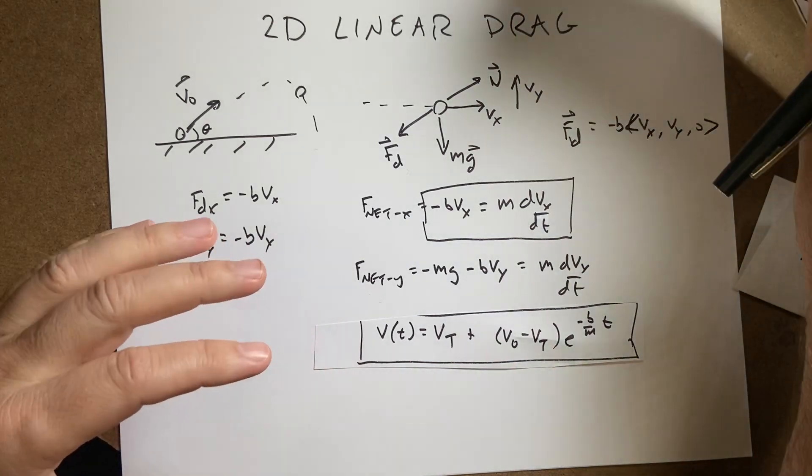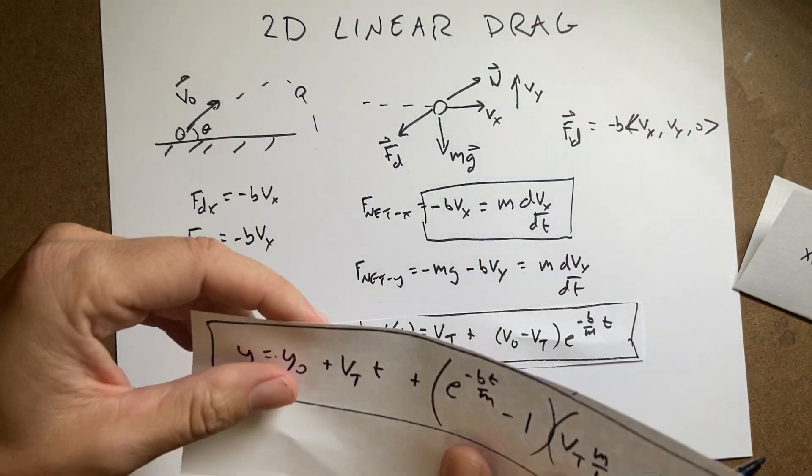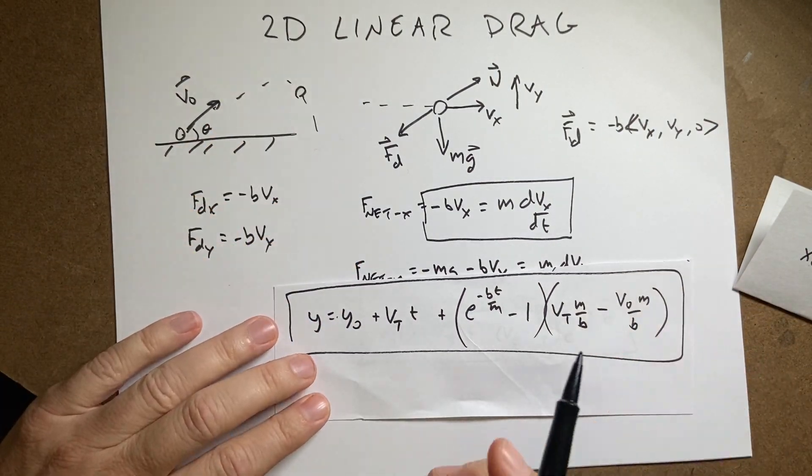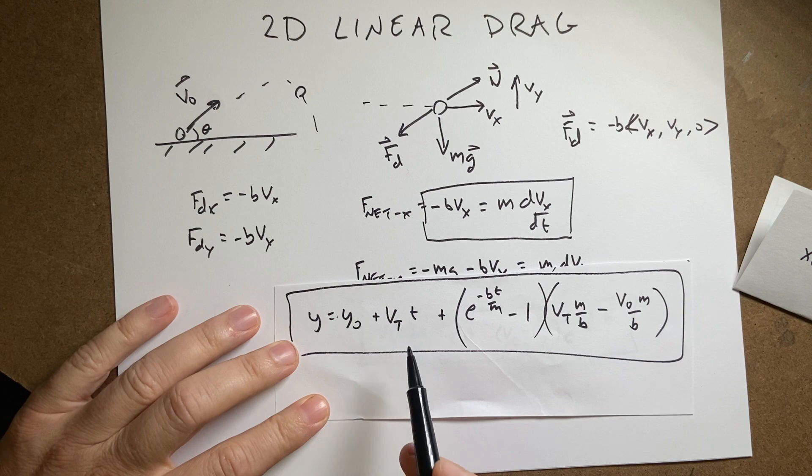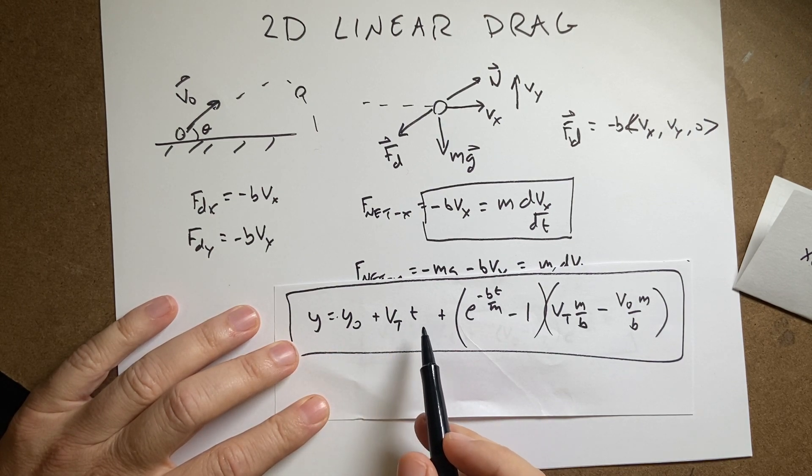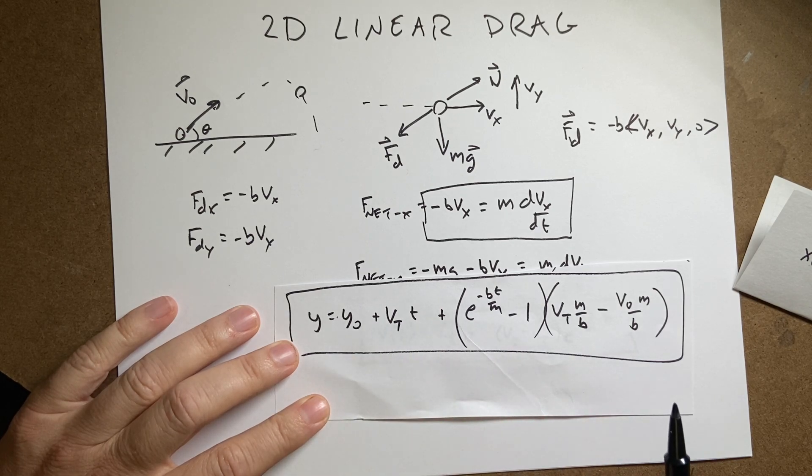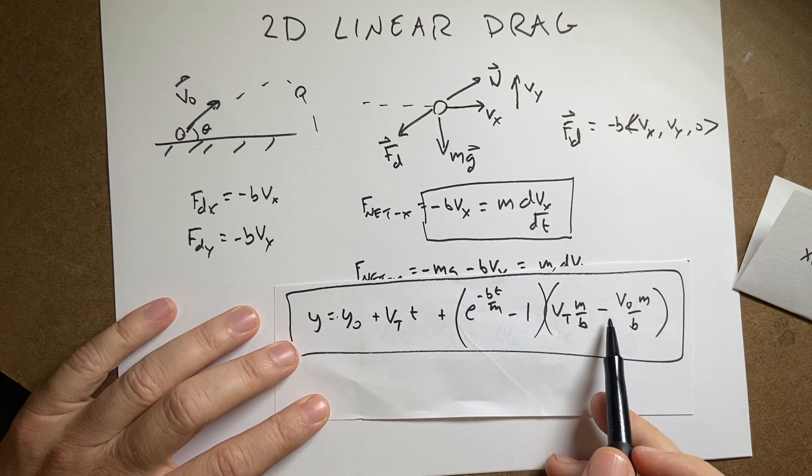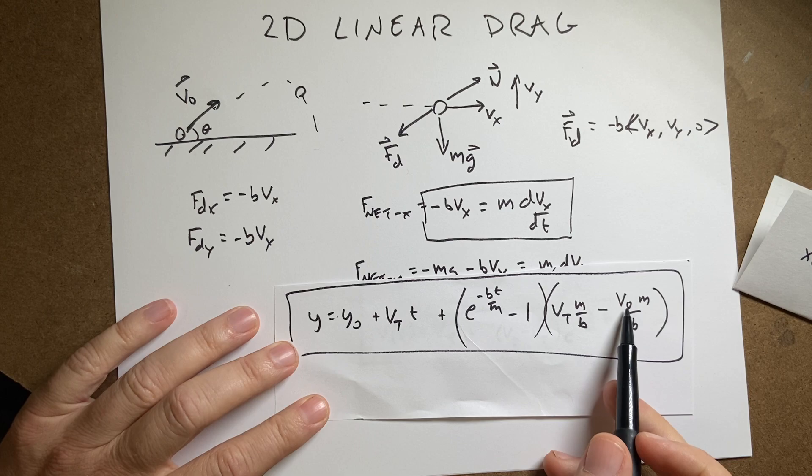And then I did, oops, sorry. This is the position as a function of time. So this would be Y, Y0. This is the terminal velocity, which is just a number. And this is the initial velocity in the X direction.